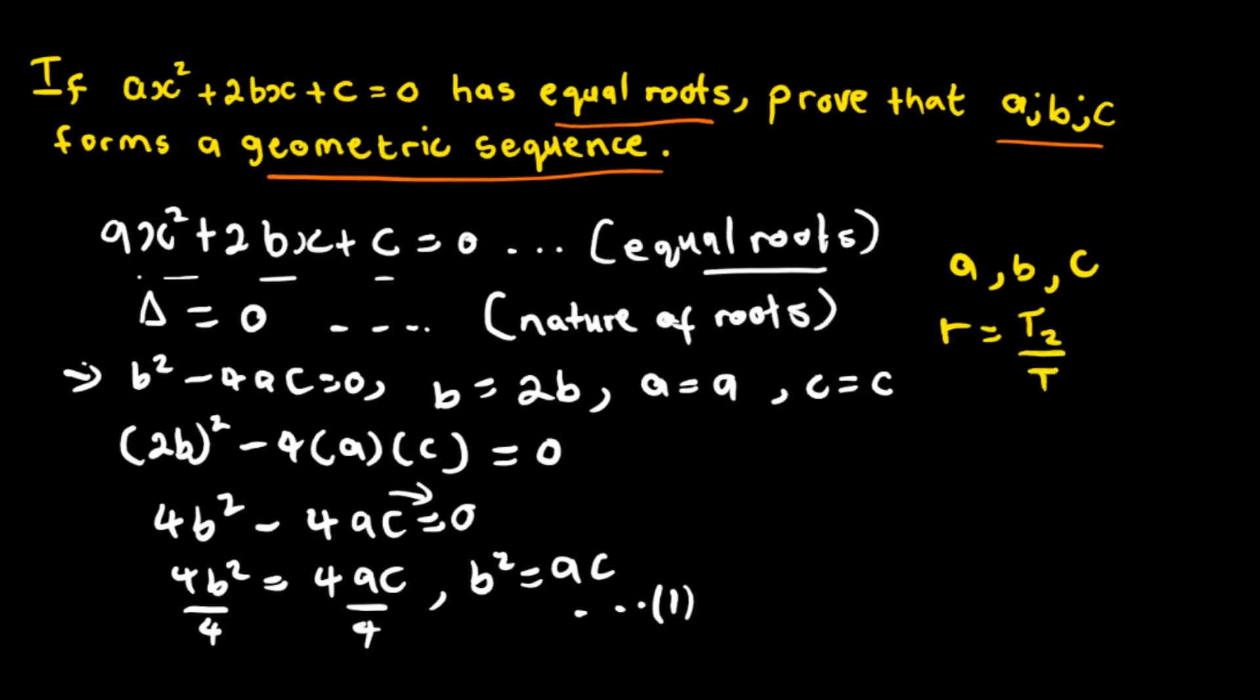The ratio condition is t₂/t₁ = t₃/t₂. Here t₁ = a, t₂ = b, t₃ = c. So b/a = c/b. Cross multiplying gives us b² = ac.